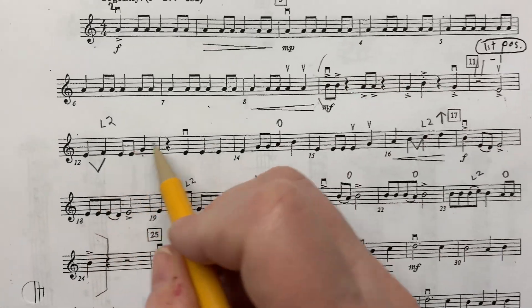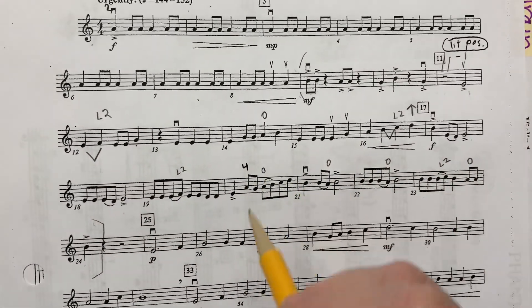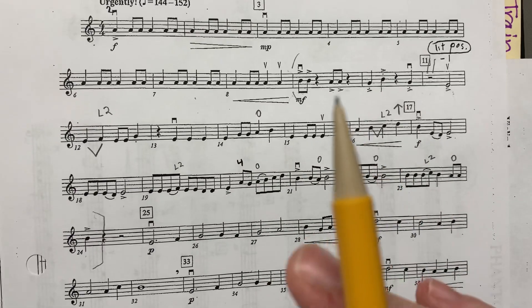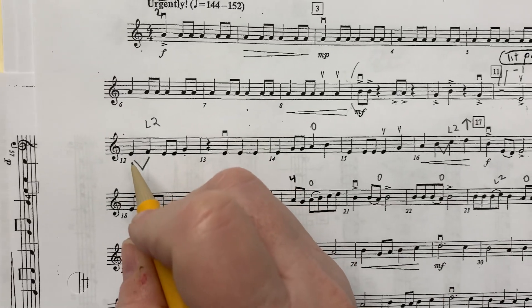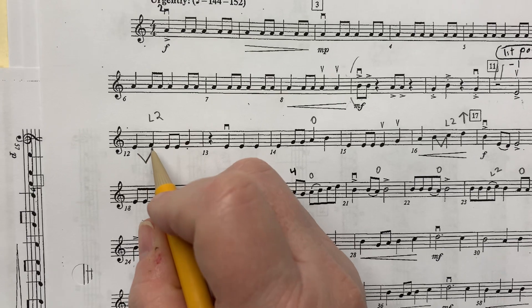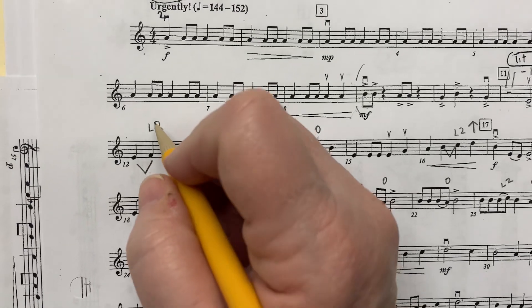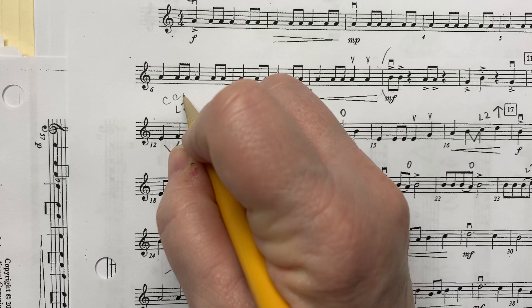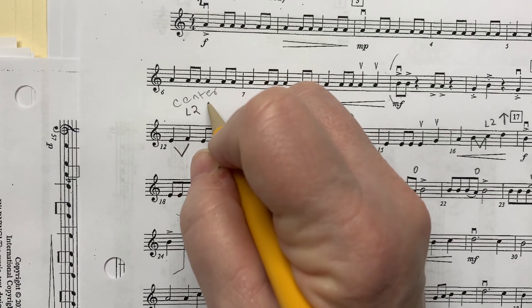Now, I've written in all of the low twos and all of the fours and opens, and I want you to do the same. So in measure 12, E, F, F natural. Remember to center it. Don't squeeze it. Center your two.